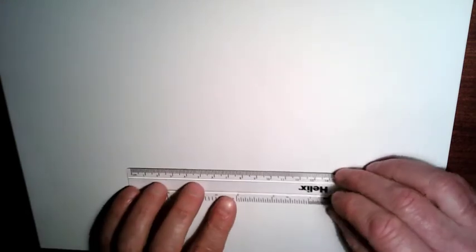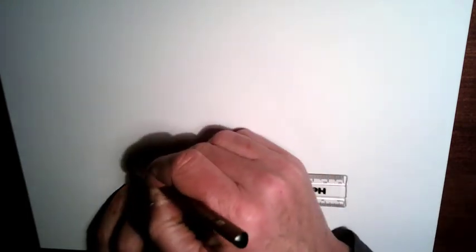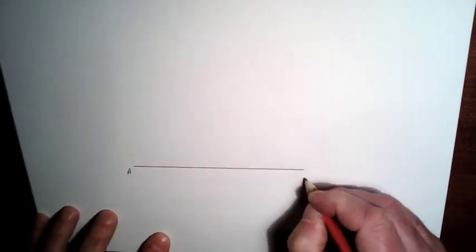In this video I'm going to construct an angle of 60 degrees. So let's take a line segment. Our line segment here, let's call it AB.